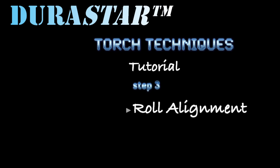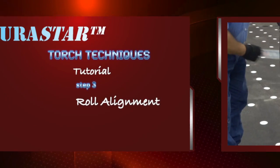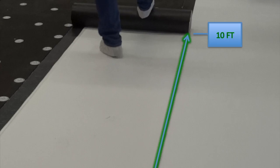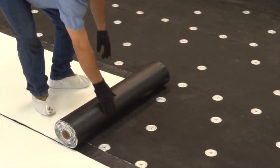Step 3: Roll Alignment. After removing the tape from the roll, the coiled membrane must be unrolled approximately 10 feet, aligned, and then re-rolled to apply.